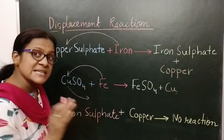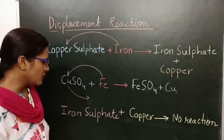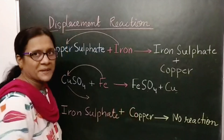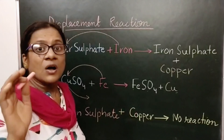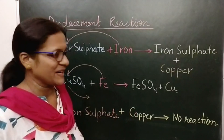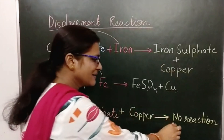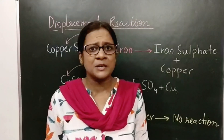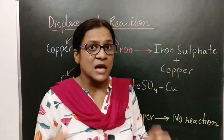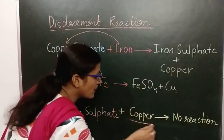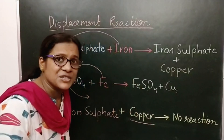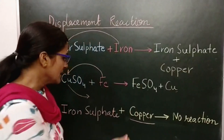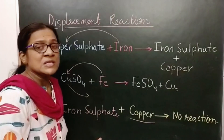In the second reaction we are observing, iron sulphate reacts with copper. We have added copper turnings into iron sulphate but we will see that there is no reaction. There is no reaction — it remains as it is, because this copper is less reactive than iron and it is not able to displace the iron.